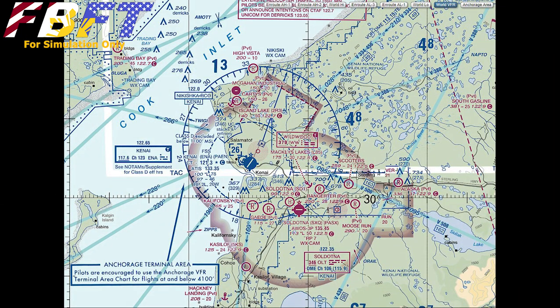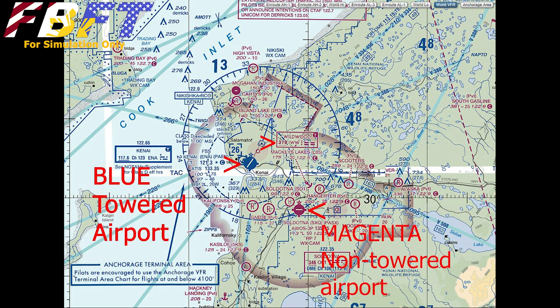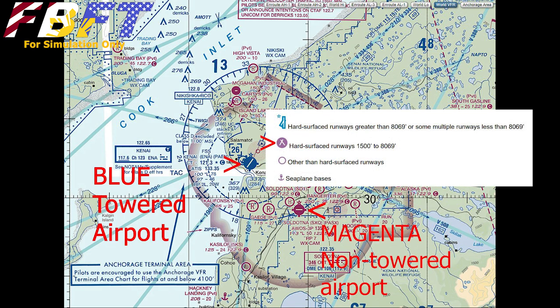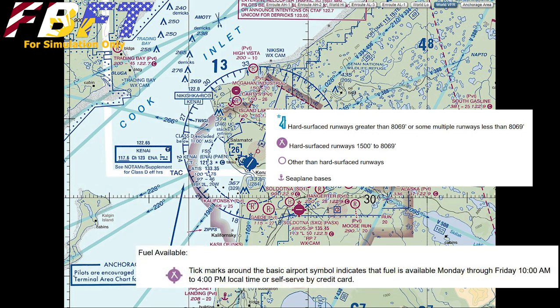Let's look at the next larger category of airport. We have moved on the map to the southwest of Whittier to Kenai, Alaska. You can see two larger airports in the center here — Kenai in blue, meaning it has a control tower, and Soldotna in magenta, meaning it is not a towered airport. Both, according to the key, are going to be hard surface runways between 1,500 and 8,069 feet. Both airports also have these little tick marks around them, meaning fuel is available there.